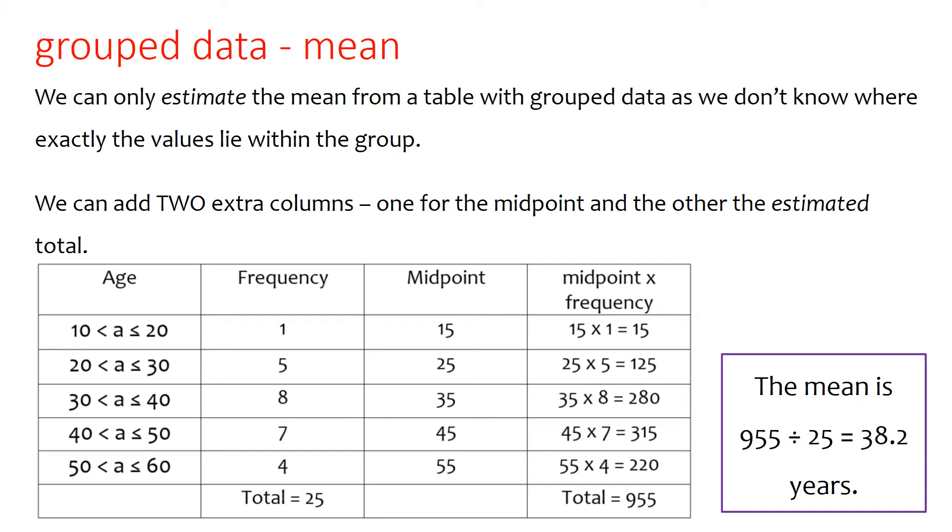So we've got 955 as all the ages, or estimated ages added together, and 25 people. So to work out the estimated mean here, we do 955 divided by 25, which gives us 38.2 years. And again, think, does that answer seem sensible? Yes, it does, because it's roughly within the middle of the data.